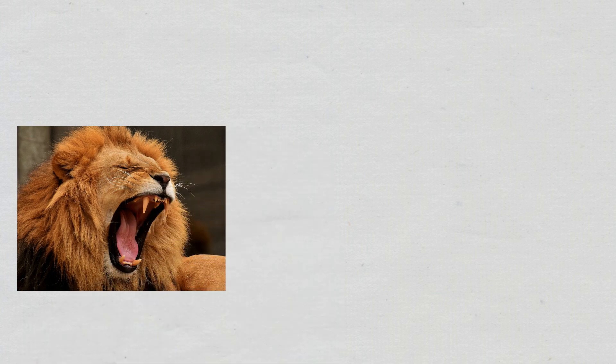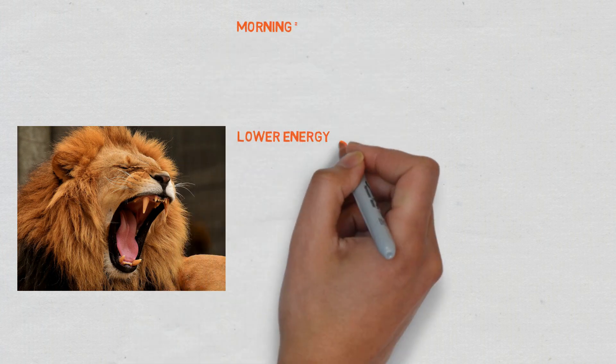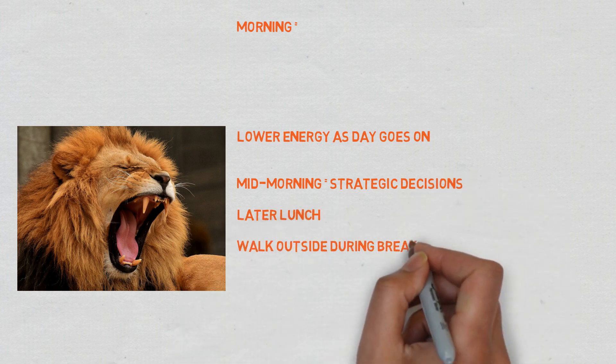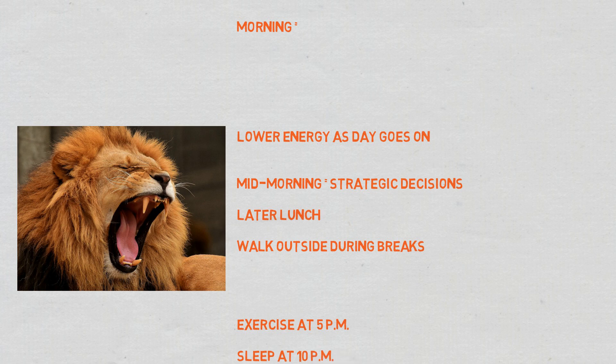Now lions have their highest energy levels in the mornings. Thereafter, their energy levels then take a dive as the day goes on. Mid-morning is the best time for lions to carry out strategic decisions. And lions tend to then crash energy-wise an hour or two post-lunch, and hence it's better for lions to delay their eating to a later time rather than an earlier time. Eating outside or walking outside during breaks from work can help you feel more alert due to the exposure to sunlight if you're a lion. As for exercise, lions should do exercise around 5pm and then finally they should go to sleep around 10pm.